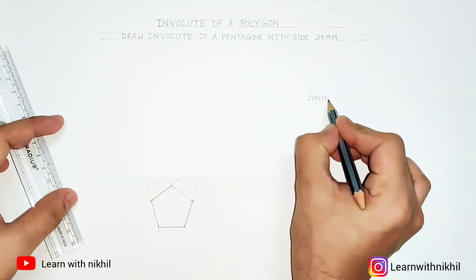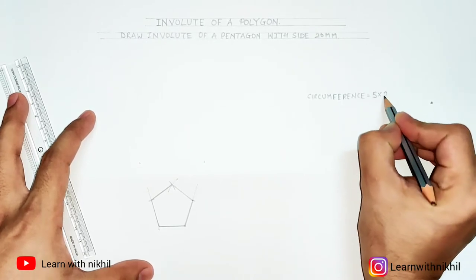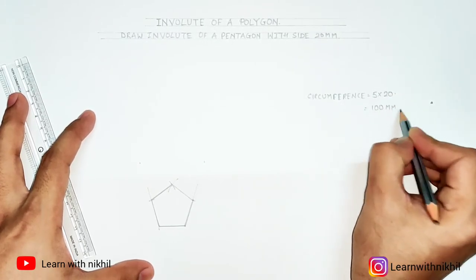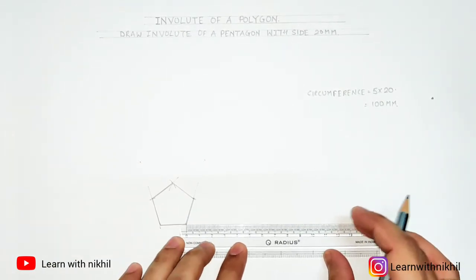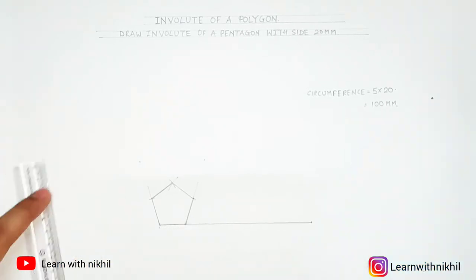Now here also a thread is rounded across the circumference of a pentagon and we have to unwind it. So circumference of a pentagon is nothing but five sides into the length, that is 100 millimeter. So here I have plotted a point of 100 millimeter and now from each of the sides we are extending the lines.